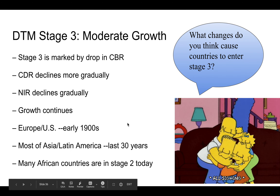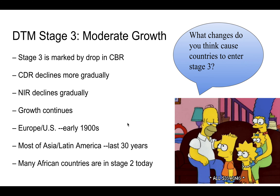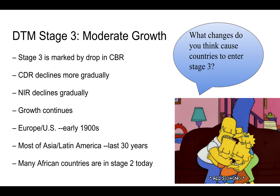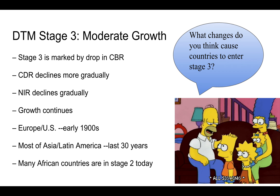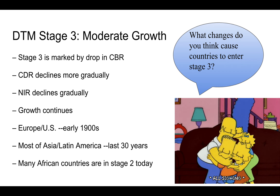In Stage 3, we begin to see a drop in CBR. The reason is family planning: women enter the workforce and are having fewer children, so the fertility rate goes down. The CDR also declines gradually. With both CBR and CDR declining, the natural increase rate declines as well, though there is still population growth. Most countries in Stage 3 today are found in Asia or Latin America, whereas many countries in sub-Saharan Africa remain in Stage 2.